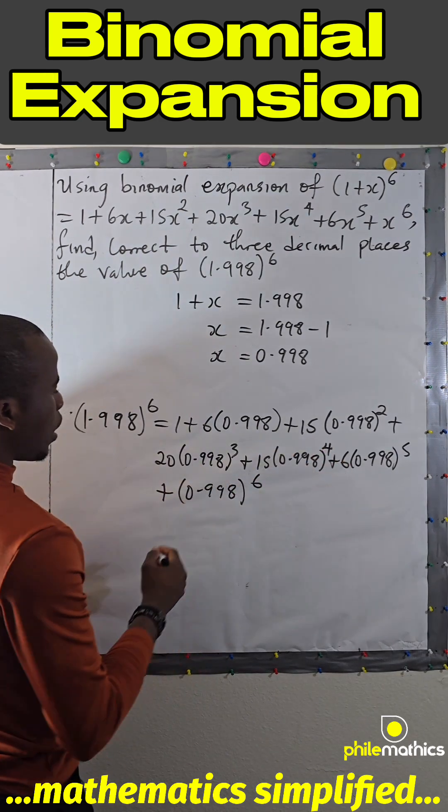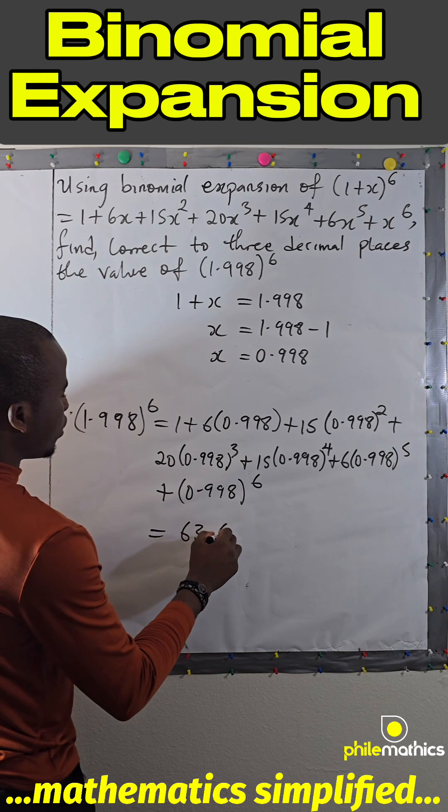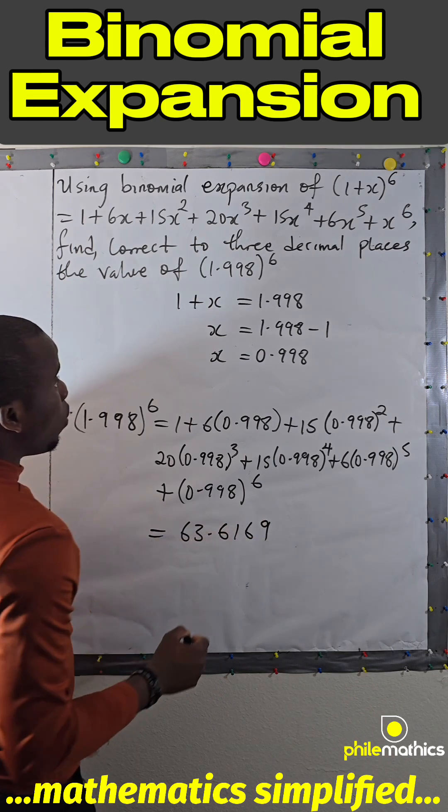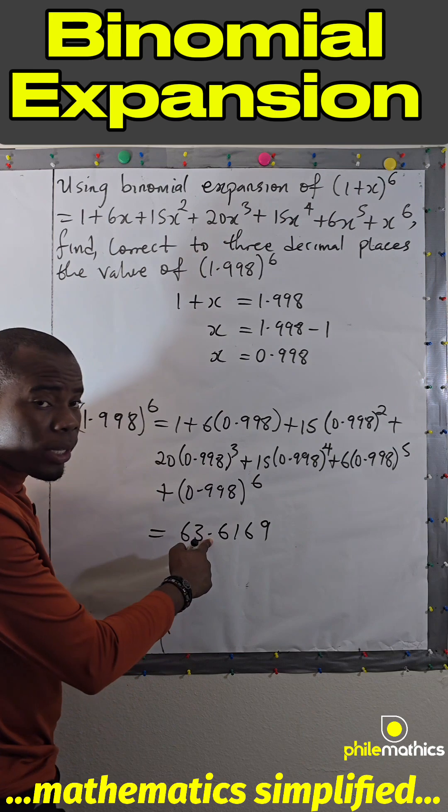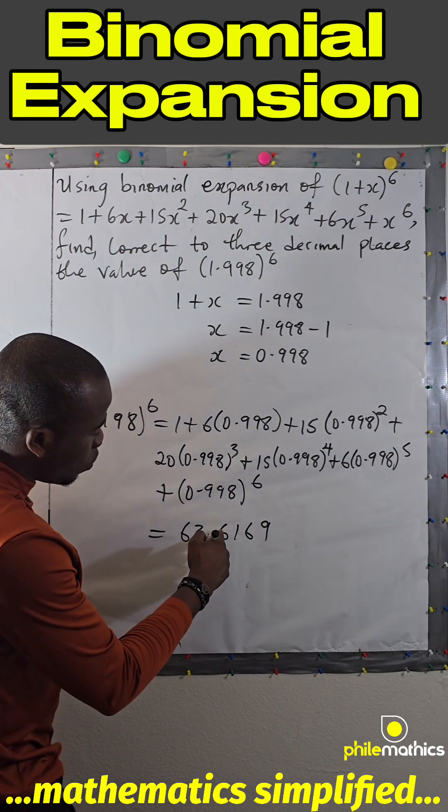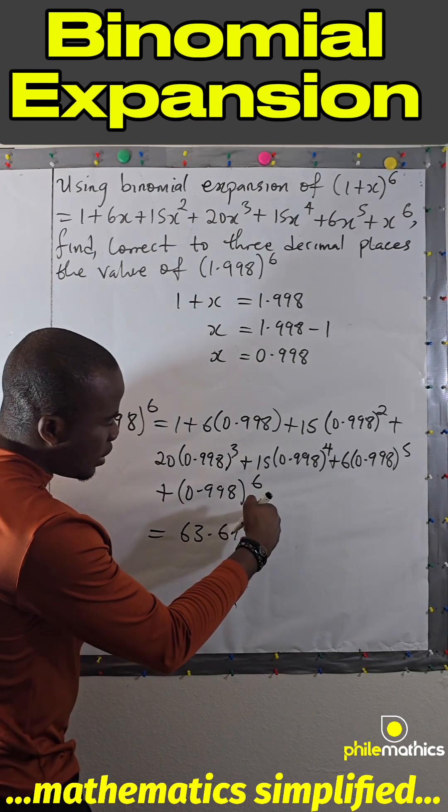If we sum this up in our calculator, we get 63.6169. We are asked to evaluate it to 3 decimal places. Since the fourth digit is 9, which is 5 or above, we round up to get 63.617.